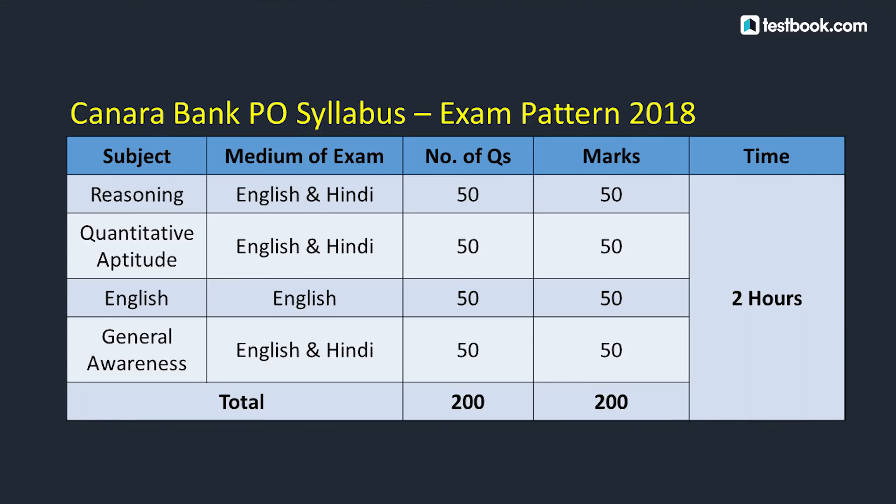You will have a composite time of 2 hours. So in total, you will have 200 questions for 200 marks. There is negative marking of 0.25 — if you give one answer wrong, 0.25 marks will be deducted.